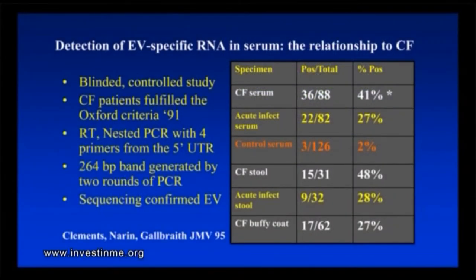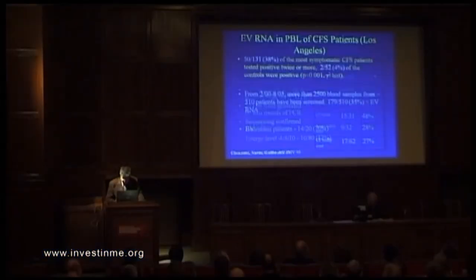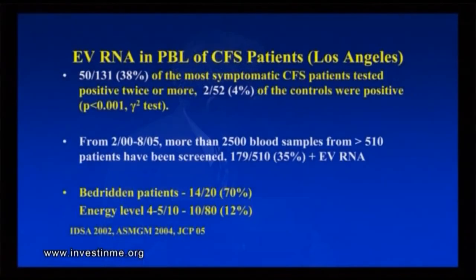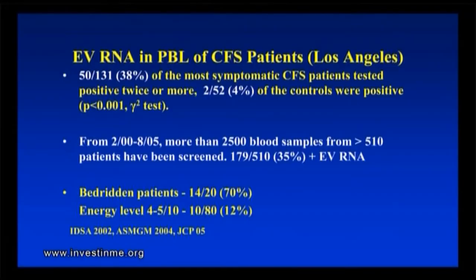This is a study by British investigators — Clements, Naren, Galbraith, et al., published in 1995. It was a blinded study looking at the serum of chronic fatigue patients versus controls. They were able to find enterovirus RNA in 41% of patients' serum versus only 2% of controls. In the white blood cell layer — the buffy coat — it was 27%. The NIH in America was not able to reproduce this result, and this was the point of contention, the point of disagreement. Enteroviruses became non-existent, and this disease was said to be psychogenic. There was a basis for that, because we were not on the same page.